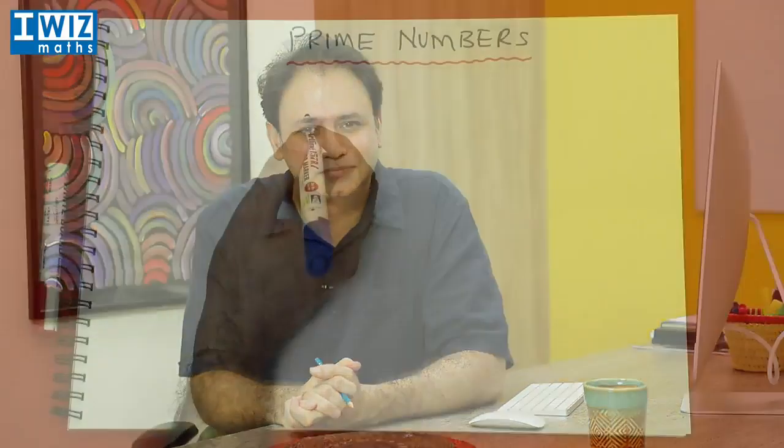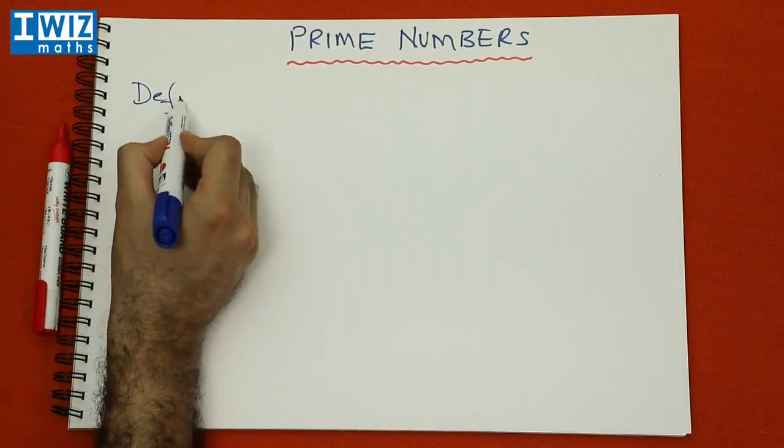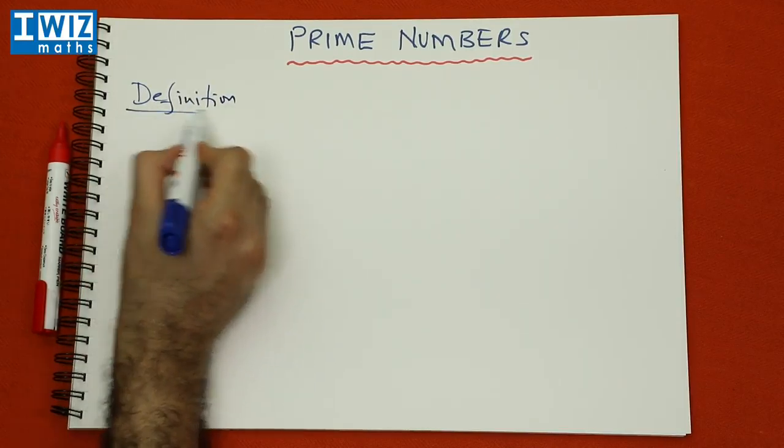It is often said that mathematics is the queen of the sciences, and within mathematics it is number theory — the study of numbers — which is an extremely important field of study. Within the study of numbers, there is a fascinating set known as prime numbers that have kept mathematicians busy for a very long time. In this video we will introduce you to these fascinating numbers, give you the definition, provide a few examples, and leave you with a few questions to try out for yourself. Let's start with the definition of prime numbers.